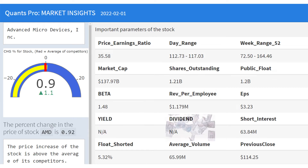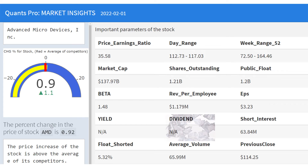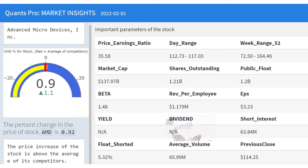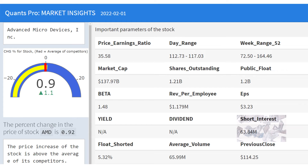The dividend value is the payment to shareholders in stock rather than money. A dividend refers to a reward — cash or otherwise — that a company gives to its shareholders. Dividends can be issued in a variety of ways, whether in cash, stock, or any other form.